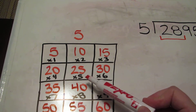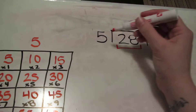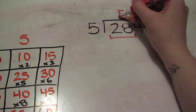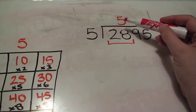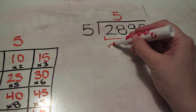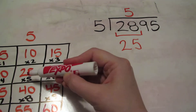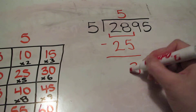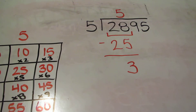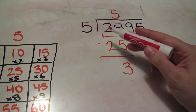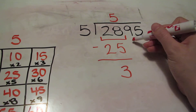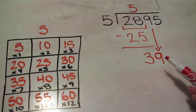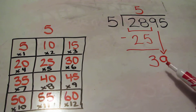The closest I can get to 28 is 25 — if I go to 30, I'm going to go over, so I can't use that. So what I'm going to pick is 5 times 5. 5 goes into 28 five times. I do my multiplication: 5 times 5 is 25. I subtract that amount — 28 minus 25 is 3. So I've finished working with the thousands and hundreds. Next I'm going to bring down the 9.